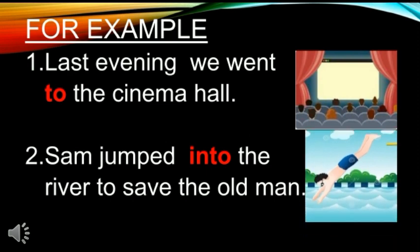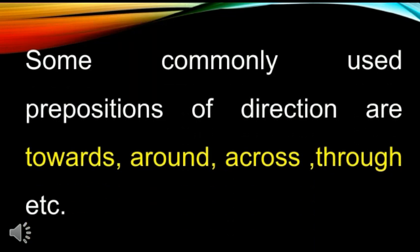For example, 'Last evening, we went to the cinema hall.' In this sentence, we have used the preposition 'to.' 'Sam jumped into the river to save the old man.' Here we have used the preposition 'into.' The preposition 'to' has a sense of destination, and the preposition 'into' is used with verbs denoting motion. Some commonly used prepositions of direction or movement are: towards, around, across, through, etc.